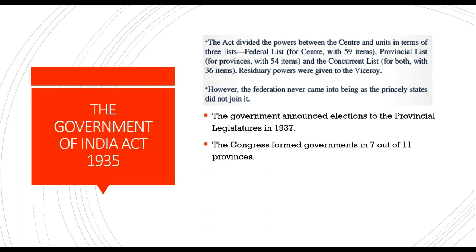The federation never came into being as the princely states did not join it. The government announced elections to the provincial legislatures in 1937; the Congress formed governments in 7 out of 11 provinces. The Congress ministries did notable work in the social field: upliftment of village industries, promotion of education, welfare of tribals, and release of prisoners.